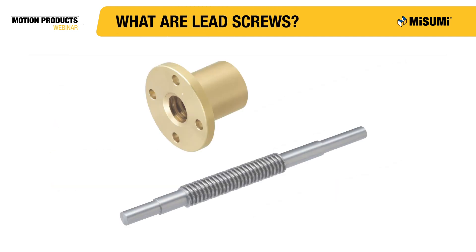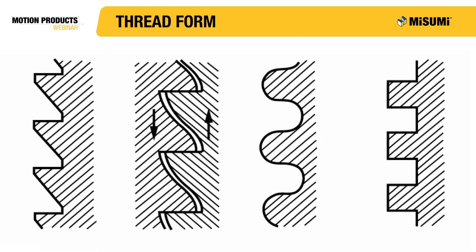At its most fundamental level, a lead screw is simply a threaded rod and a nut, but instead of being used for fastening, it is used to translate rotary motion into linear motion. Due to this factor, it is a key difference in the design of a lead screw as opposed to a threaded rod — this difference is the thread form that is used.